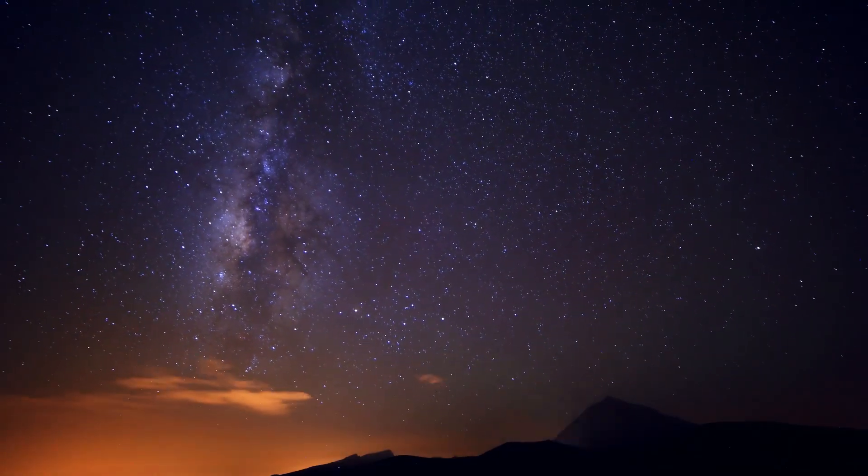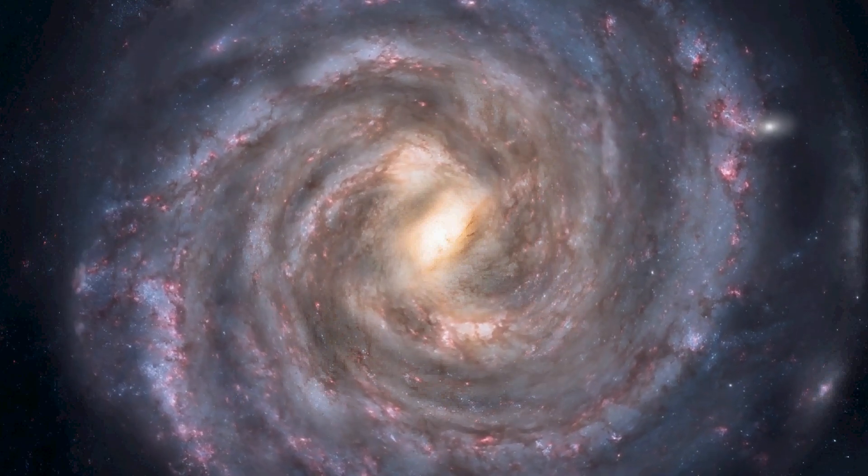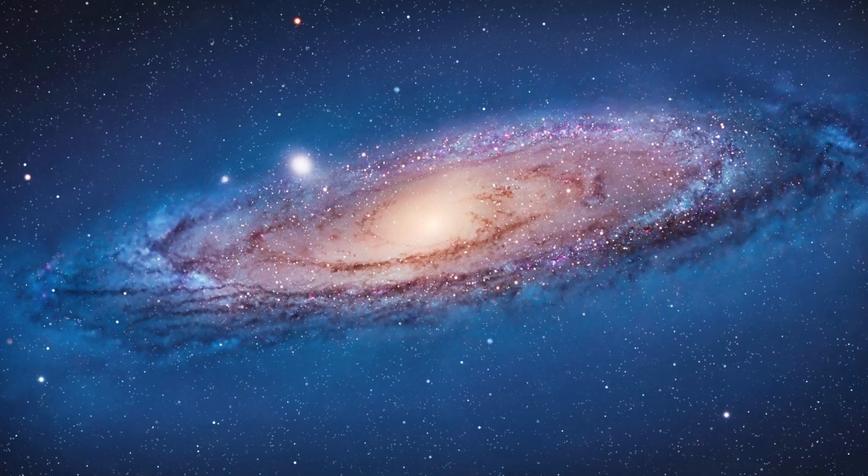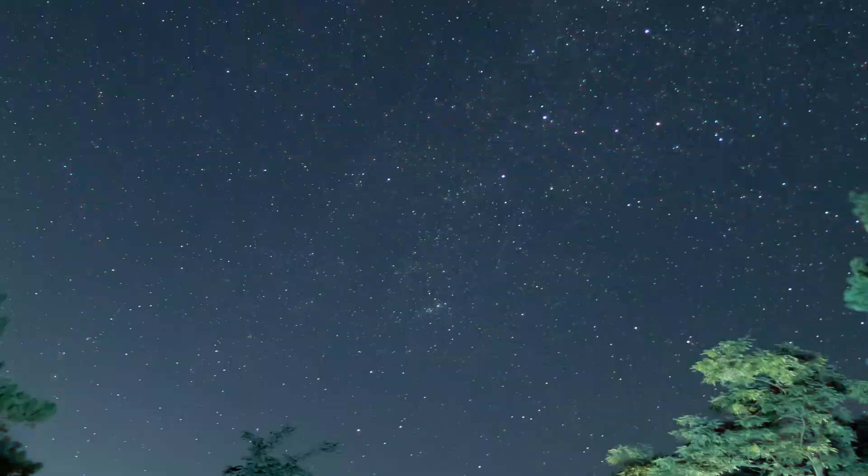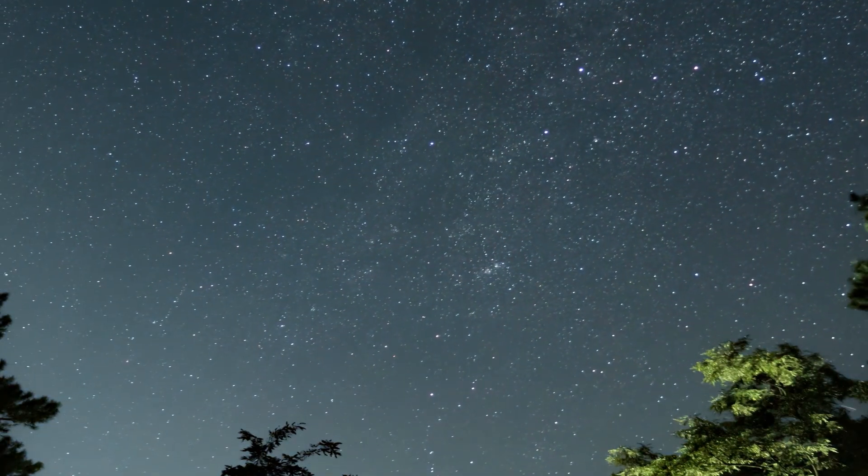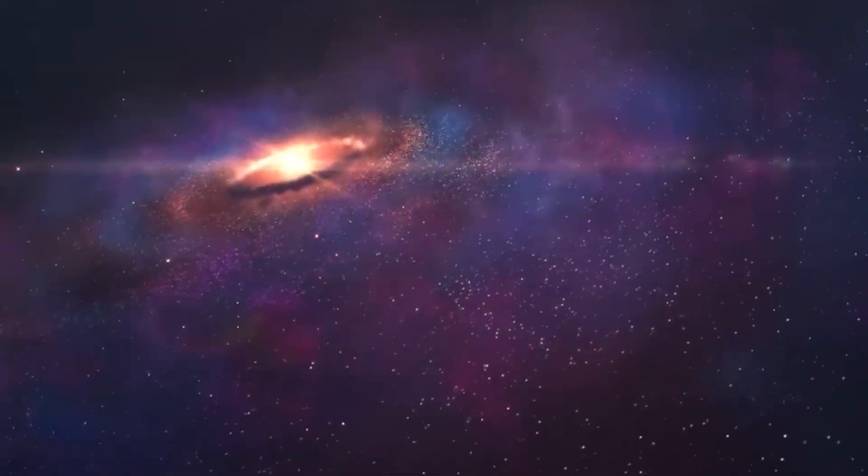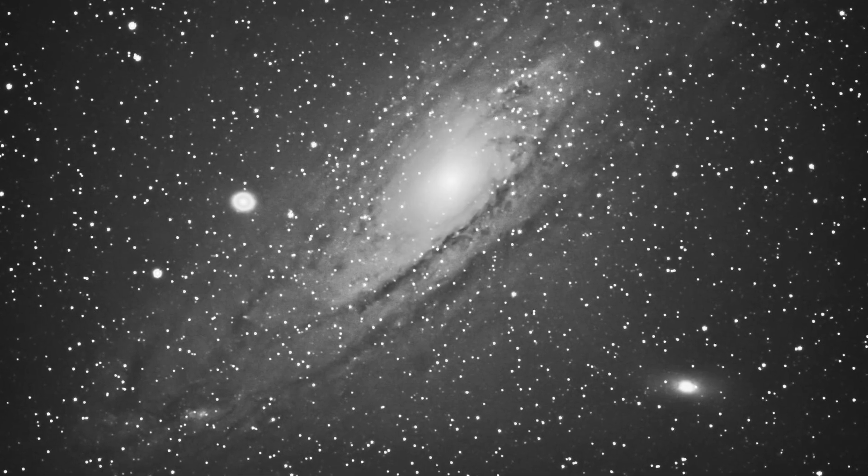Have you ever looked up at the stars in the night sky and wondered what they were like? Let me introduce you to the Andromeda Galaxy if you're interested in learning more about the wonders of the cosmos. The gorgeous spiral galaxy known as Andromeda, often referred to as Messier 31 or M31, is situated roughly 2.5 million light years away from our own Milky Way.